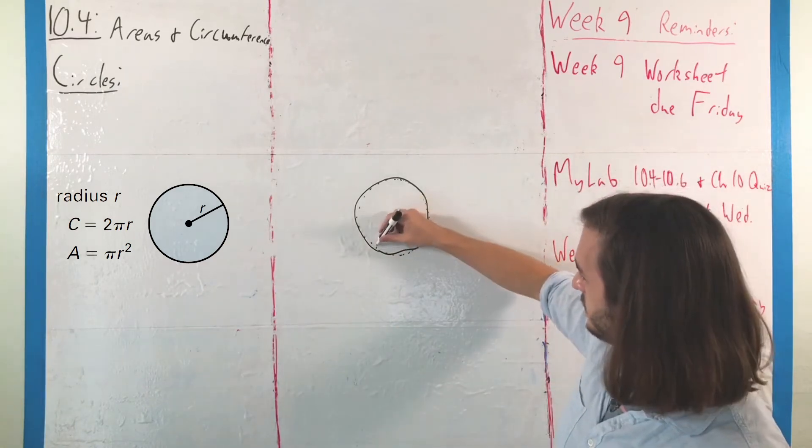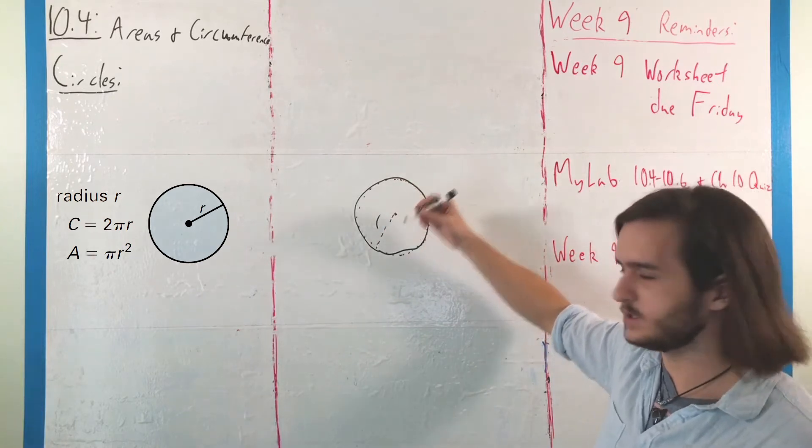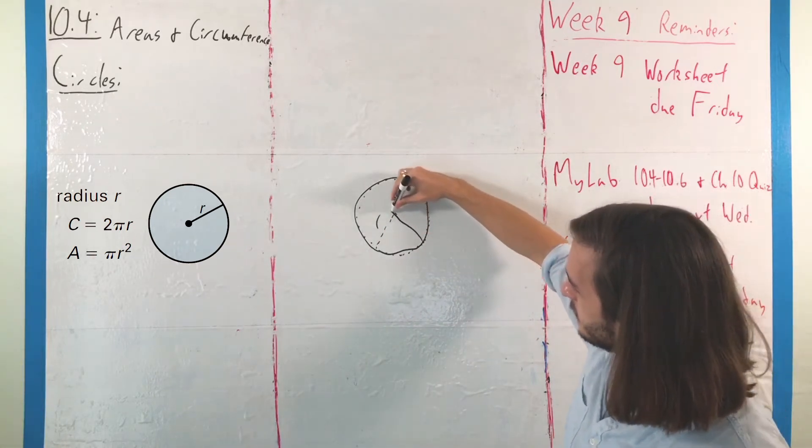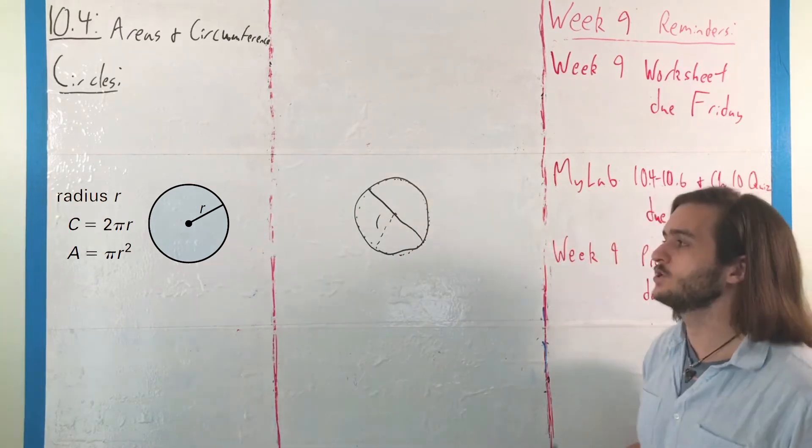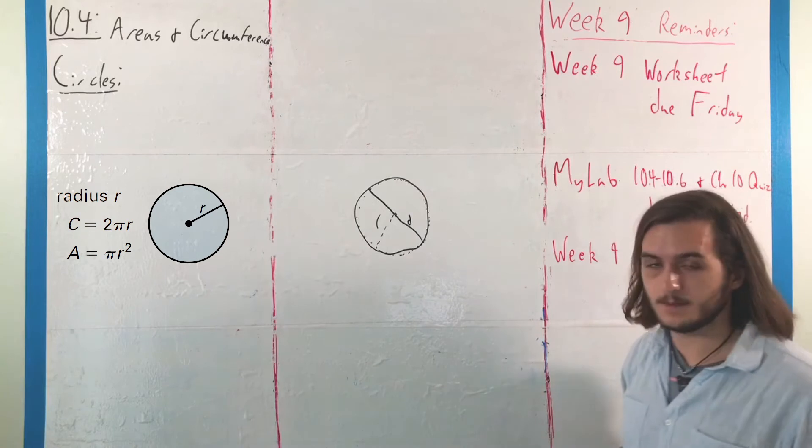This value right here, from the edge to the center, is your radius, and then if we draw some line that goes from edge to edge through the center, that's where you get the diameter.